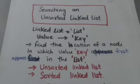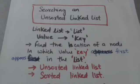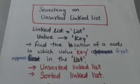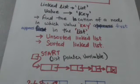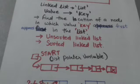Hello friends, welcome back. In this tutorial we will study about searching an unsorted linked list. Suppose there is some value key and there is a linked list. There are two searching algorithms to find the location of a node in which value key first appears. In the first algorithm, it is not assumed that data in the linked list are sorted. In the second algorithm, it is assumed that data in the linked list are sorted.